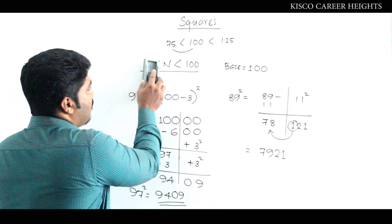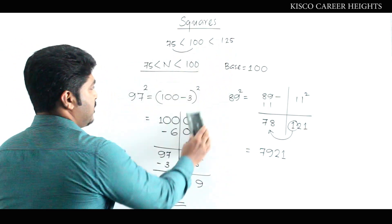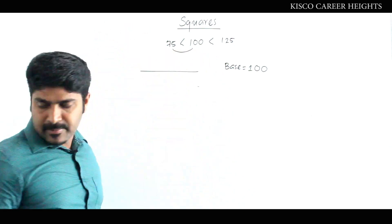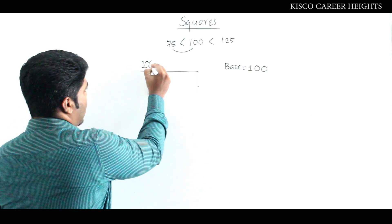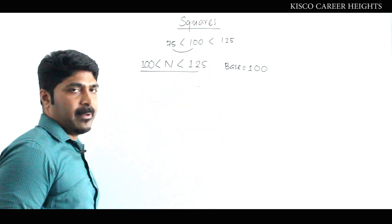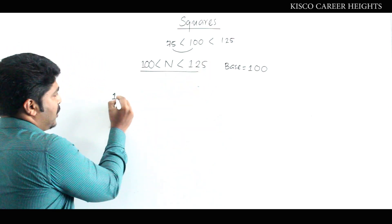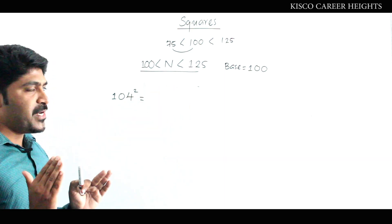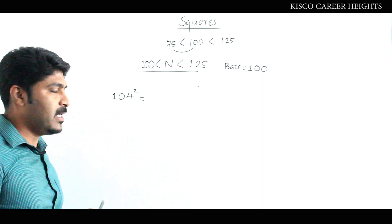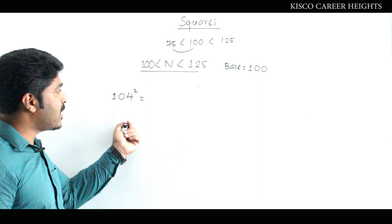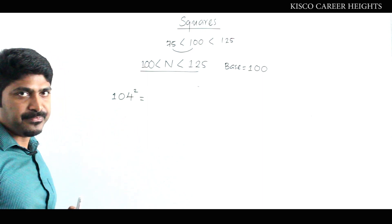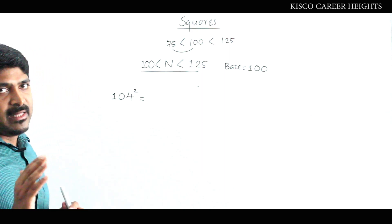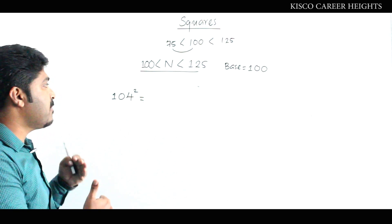Now we move to the next range — numbers greater than 100 but less than 125. That is the Type 2 calculation. Suppose we need to find 104 squared. This value lies in this range. The key difference from the previous method is that instead of a negative complementary, here we are dealing with a positive complementary, because 104 is 4 more than 100. I will directly apply the method without re-proving it.